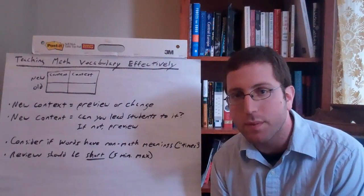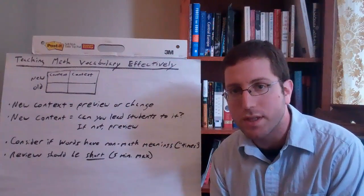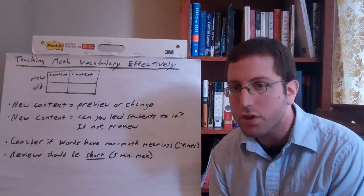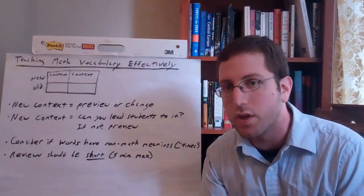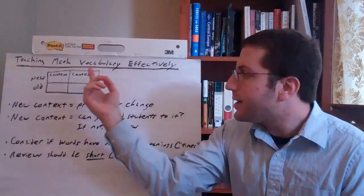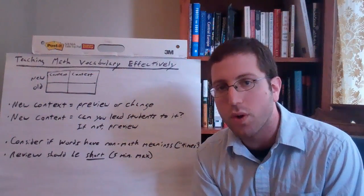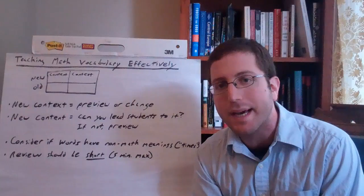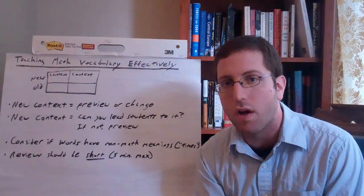What the authors talk about is that we have to think about teaching math terms in a couple of different ways. There are questions to ask ourselves as teachers. First, are the words that we're teaching new or old? Is this review or is this introducing new math terms? And then we need to think about what's the context in which we're teaching these terms? Is that new or is that old? What they mean by context is the way you're setting up the problems that you're asking the students to solve.